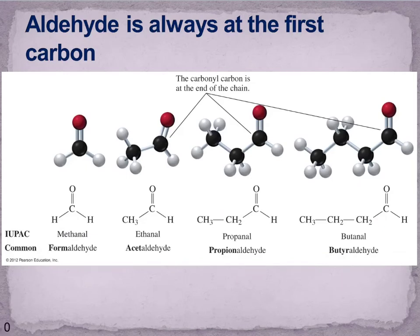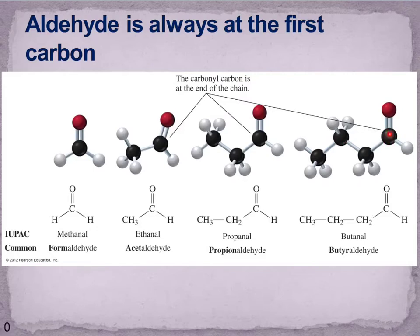Here are some examples of aldehyde molecules and their naming conventions: methanal, ethanal, propanal, butanal. The prefixes — meth, eth, propan, bute — still tell us the number of carbons. Notice we don't need a number in front of the name because an aldehyde group must be at the terminal atom, so it's always carbon one. We always start counting where the aldehyde group is. The IUPAC names all end in '-al'.